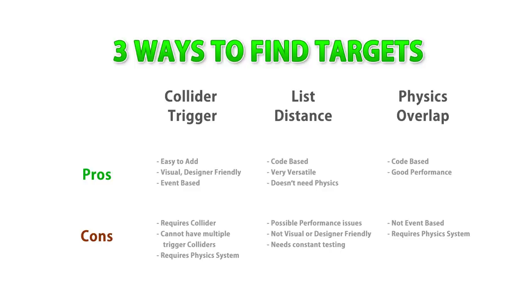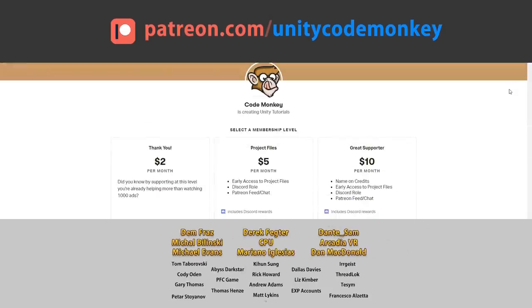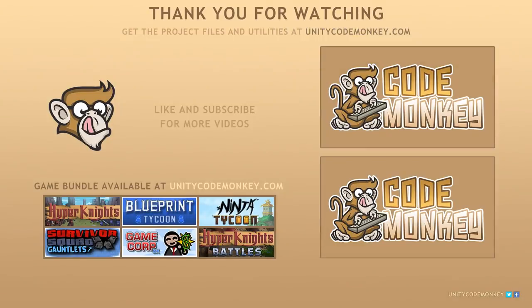So there you have it — three nice methods for finding targets, each with their pros and cons. If you have other methods you'd like to use, go ahead and post them in the comments. You can download the project files and utilities from unitycodemonkey.com. This video is made possible thanks to these awesome supporters — go to patreon.com/unitycodemonkey to get some perks and help keep the videos free for everyone. If you found this video helpful, consider liking and subscribing, post any questions in the comments, and I'll see you next time!